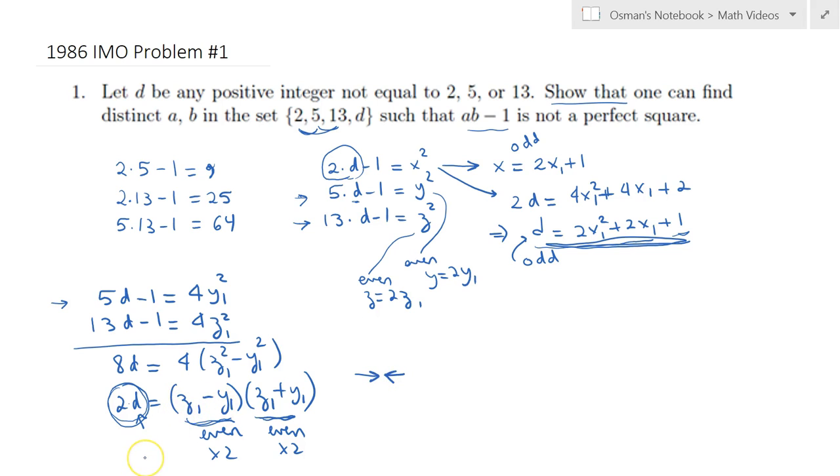So therefore our initial claim was wrong. So it's not possible to express all three of these expressions, 2d minus 1, 5d minus 1, and 13d minus 1, as perfect squares. At least one of them is not a perfect square. And that proves the statement of the problem. Hope to see you in our next video.